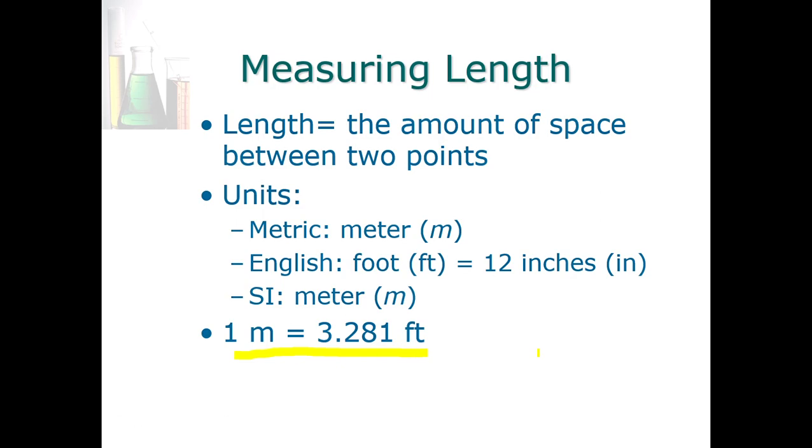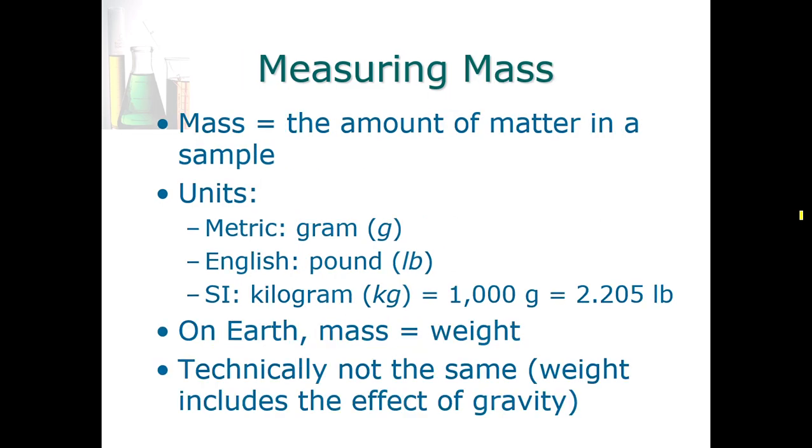How about mass? Mass as a property, without going into deep physics, let's say is simply the amount of matter in a substance, in a sample. In the metric system we use grams, abbreviated g. In the English system we're more accustomed to pounds and ounces. The SI system utilizes the kilogram, where one kilogram is essentially 1,000 grams, which is equivalent itself to 2.205 pounds.